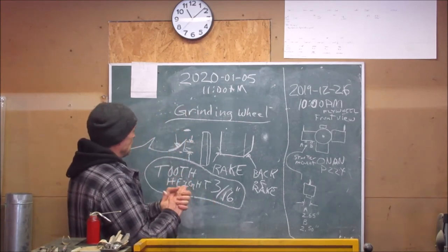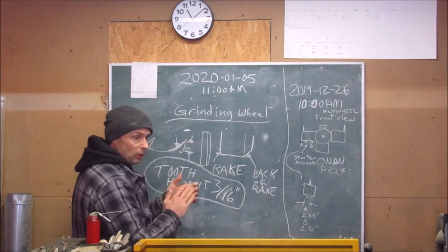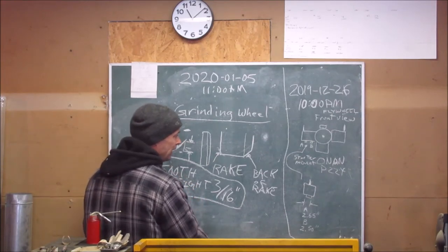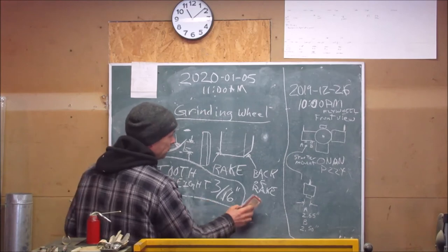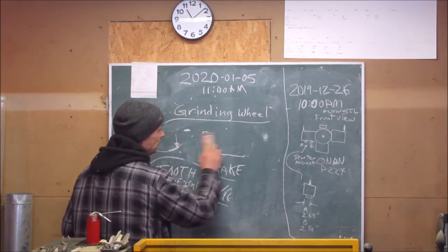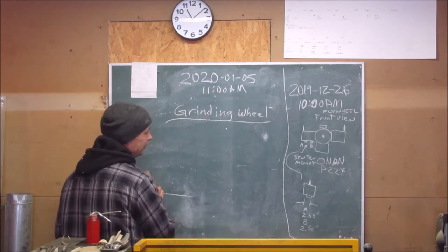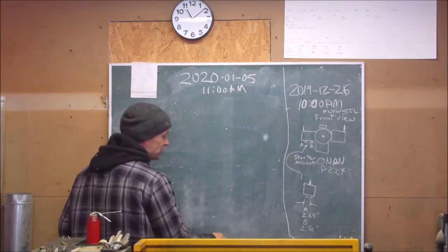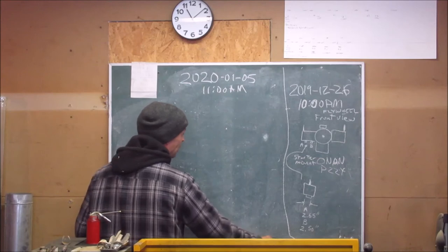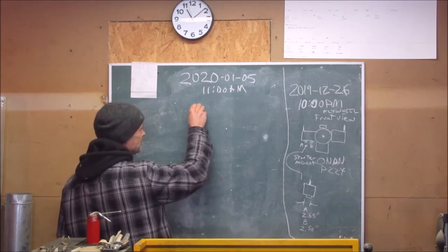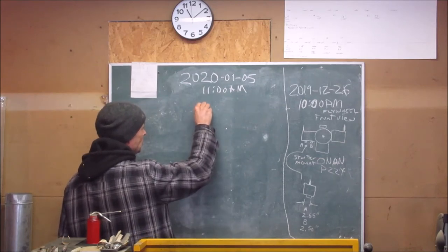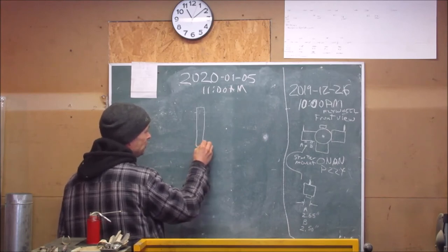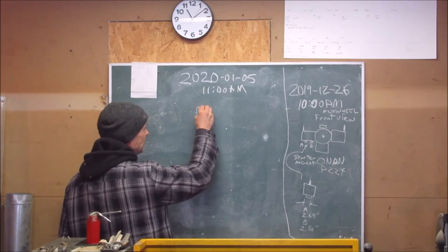The face of the ridge should be at least three sixteenths of an inch. So I'm going to resurface that wheel right now so you have an idea of what it should look like for that particular model of grinder.